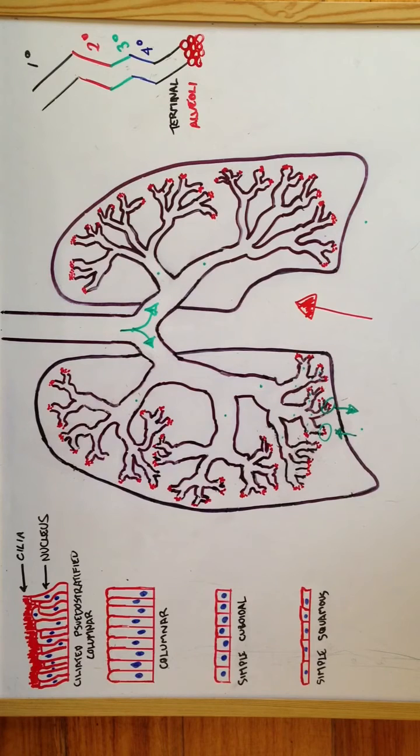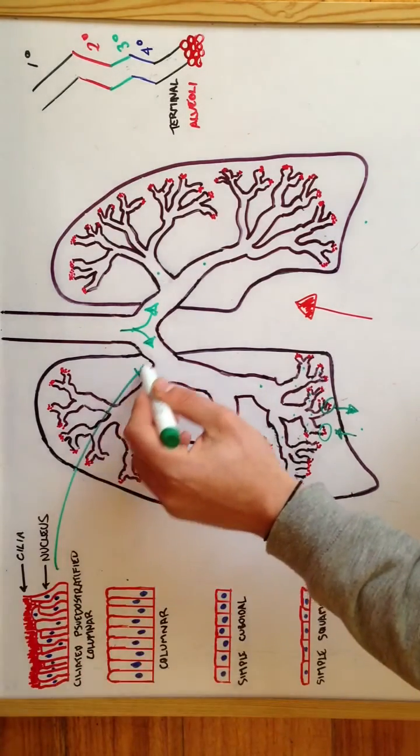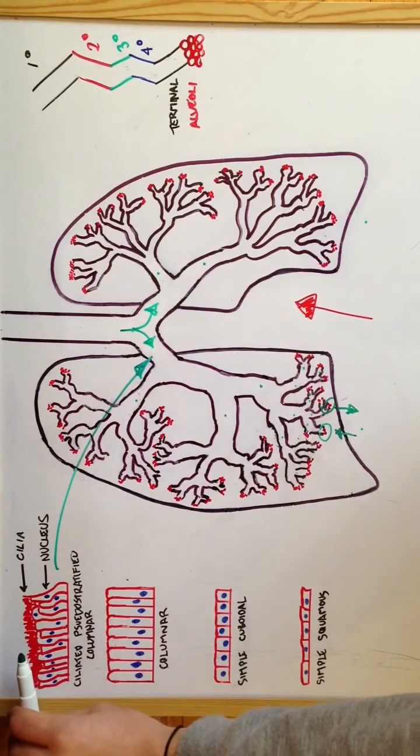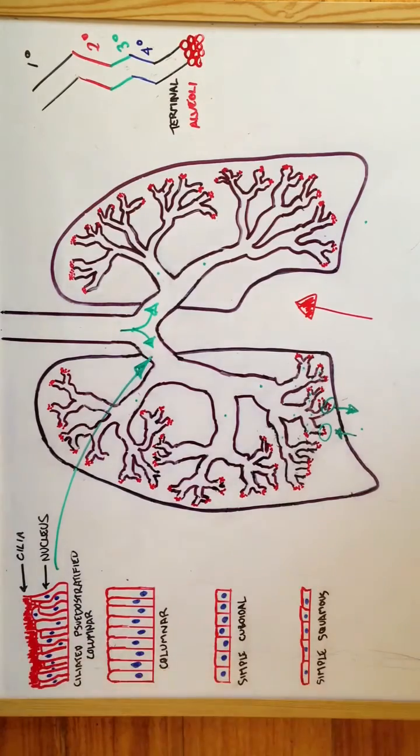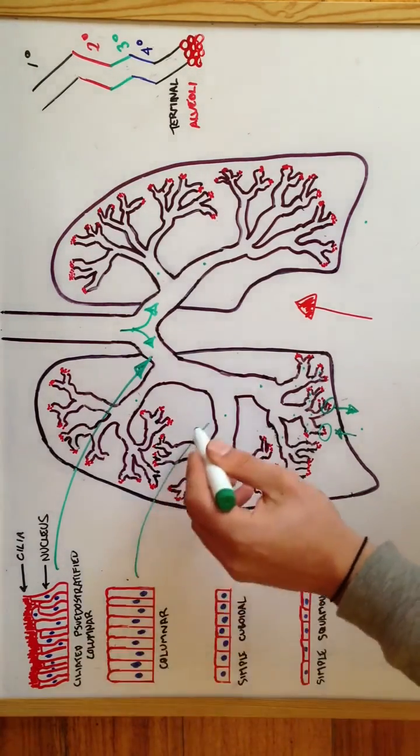The mucous membrane of the primary bronchi also changes from ciliated pseudostratified columnar epithelium—here, and as you can see, to demonstrate the cilia and the nucleus labeled on this diagram—to columnar epithelium in the secondary bronchi.